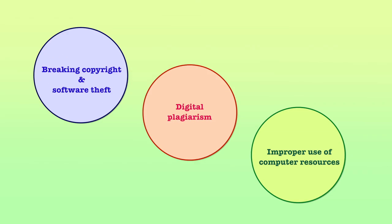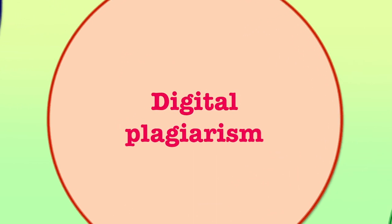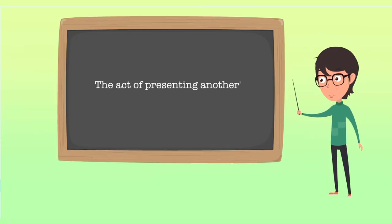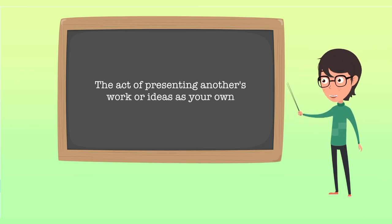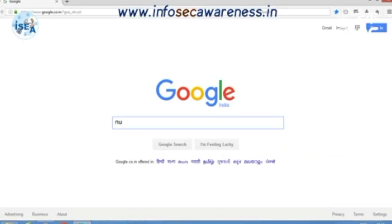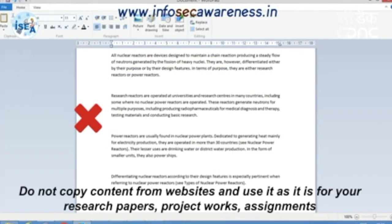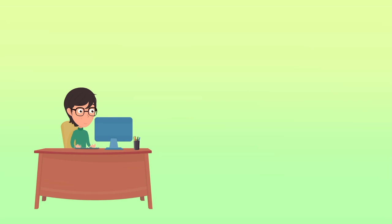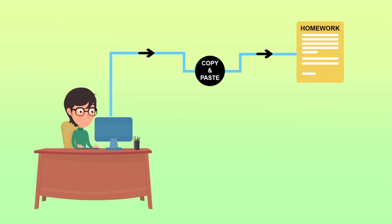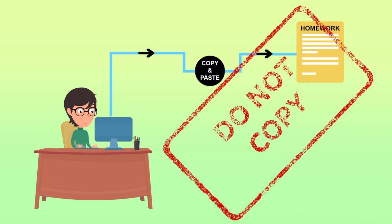The first one is digital plagiarism. Plagiarism is one of the major forms of academic dishonesty which has always existed in education including higher education. For example, assignments submitted by students may turn out to be copied from fellow students or could be taken in part or in whole from existing published works. The use of computers and the internet added to the means that students have at their disposal to commit plagiarism, making it much easier to do and much harder to detect.